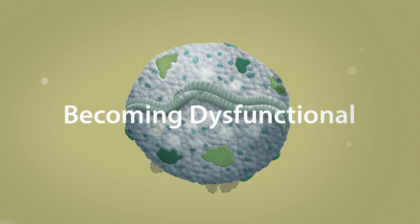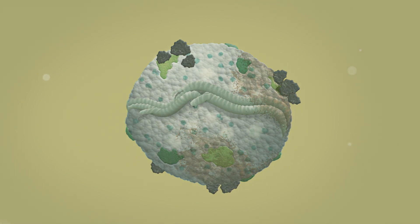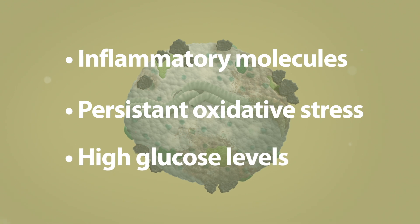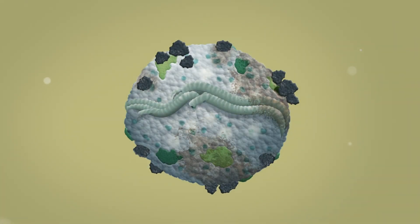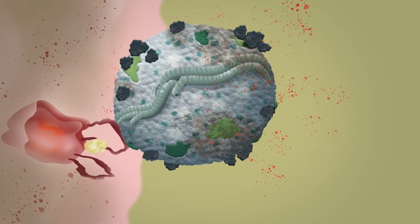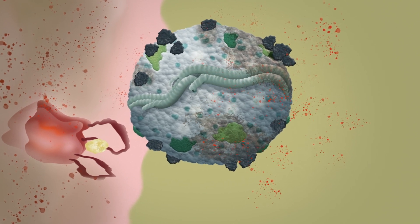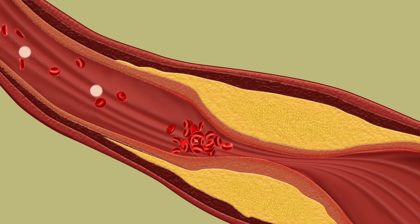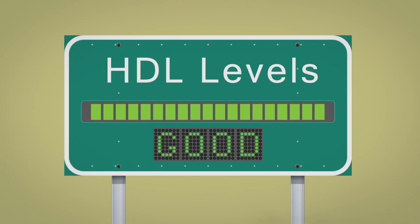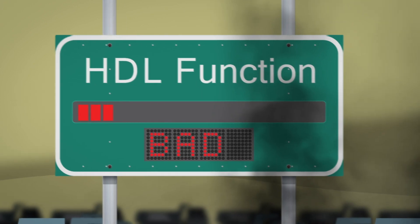Unfortunately, HDL particles are susceptible to damage that diminishes their cardioprotective functions. Inflammatory molecules, persistent oxidative stress, and high glucose levels can all damage HDL components and activity. Damaged HDL particles cannot efficiently collect cholesterol, and severely damaged particles inflame surrounding cells and tissues. Cholesterol then accumulates within the arterial walls, and as localized inflammation increases, arterial plaques grow. Patients can have normal or high HDL cholesterol levels, but have poor HDL function.